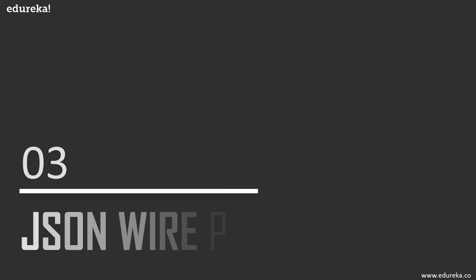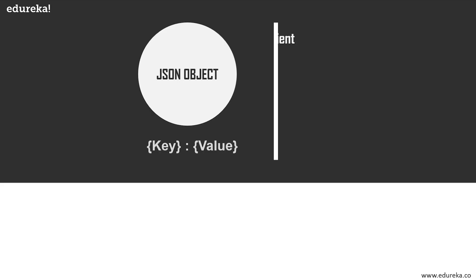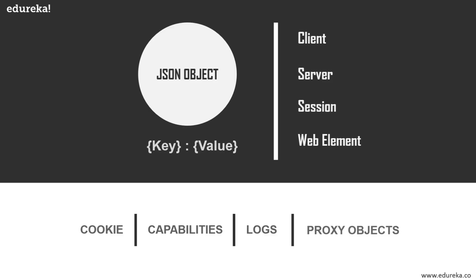Now let's take a look at the JSON wire protocol. The JSON wire protocol is the mechanism used for communicating between client and server. It is developed by WebDriver developers, and according to them, the protocol is a bunch of standardized endpoints exposed to the client using a RESTful API. This allows the WebDriver to establish communication with a server and client to perform automation. Appium uses the mobile JSON wire protocol, which is an extension to the Selenium JSON wire protocol, used to control different mobile phone behaviors. Using the JSON wire protocol, information regarding the client, server, session, web elements, cookies, capabilities, log files, and proxy objects can all be passed through.